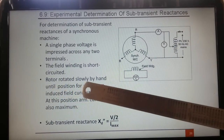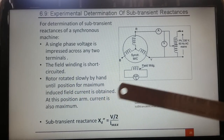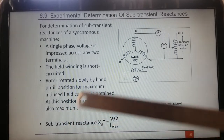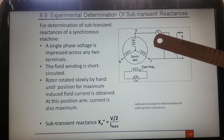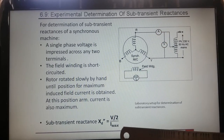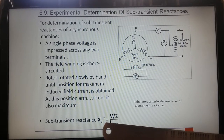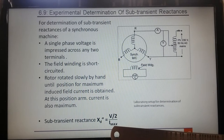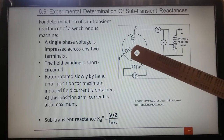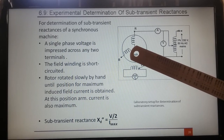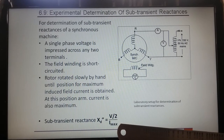The rotor is rotated slowly by hand until the position for maximum induced field current is obtained. At this position, the armature current is also maximum. You record this reading — that particular value is maximum — and at that point the machine is at the D-axis, because both the field part and the armature part of the winding along the D-axis have minimum air gap, which is why the current is maximum at that time.